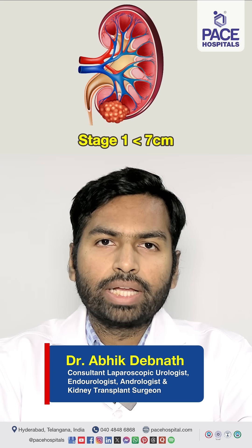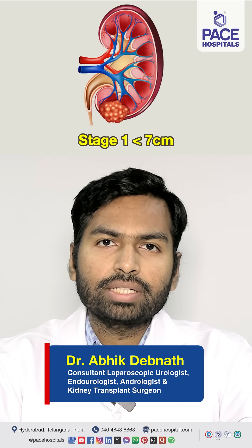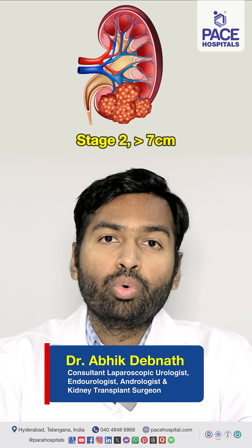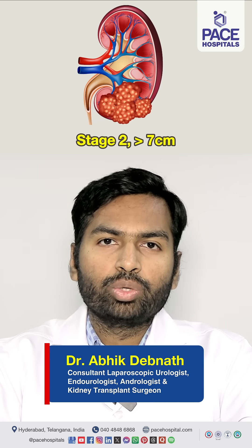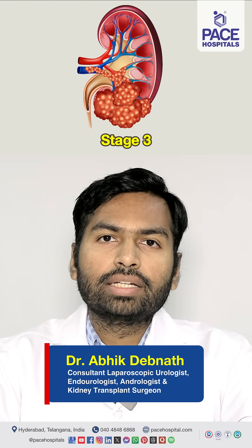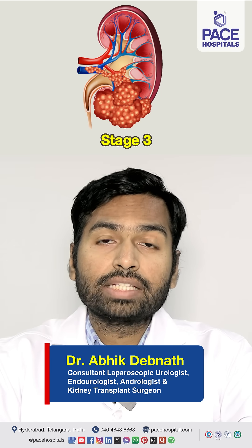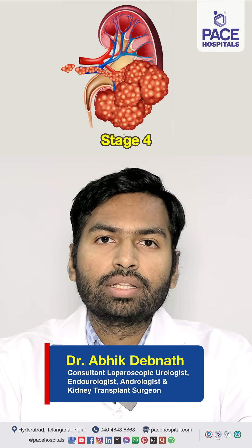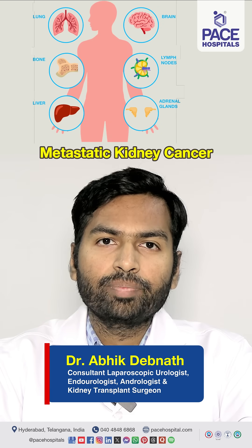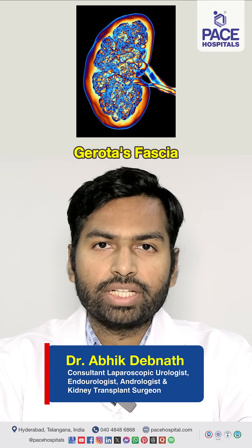If the cancer is confined to the kidney and is small in size — less than 7 centimeters — then it is called stage 1. Stage 2 means it is more than 7 centimeters but still confined to the kidney. Stage 3 means it has invaded the sinus, collecting system, or vessels of the kidney. Stage 4 includes either metastatic spread to other body parts, or spread outside the covering of the kidney, which is called the Gerota's fascia.